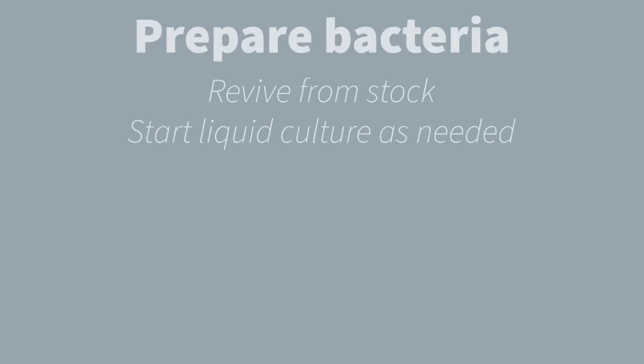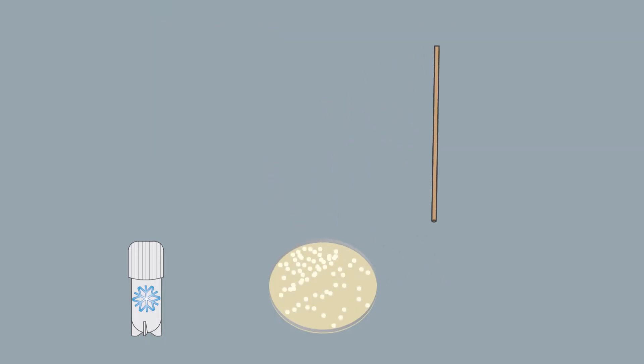To begin, we get our bacteria growing from freezer stocks. For Zymomonas mobilis, that means streaking a rich media plate and then using a single colony to inoculate an overnight stock. The next morning, we'll also start a fresh liquid culture in rich media before heading out to take our environmental samples.